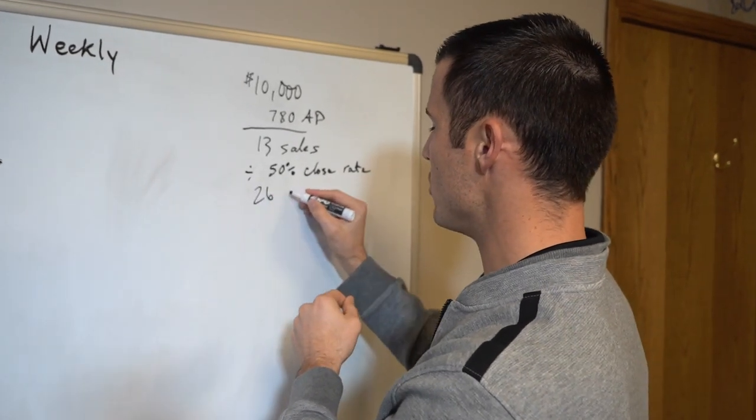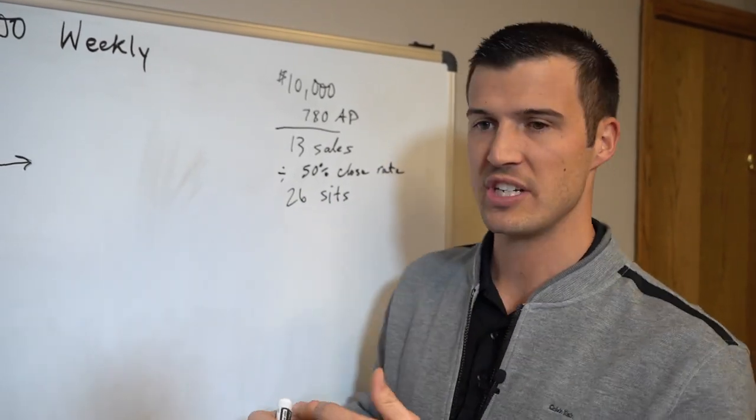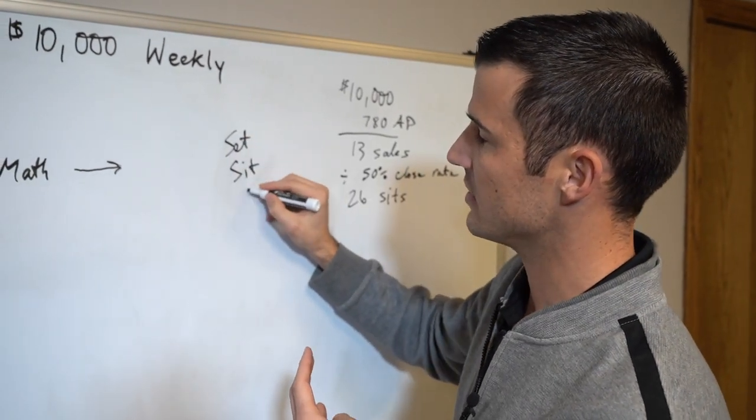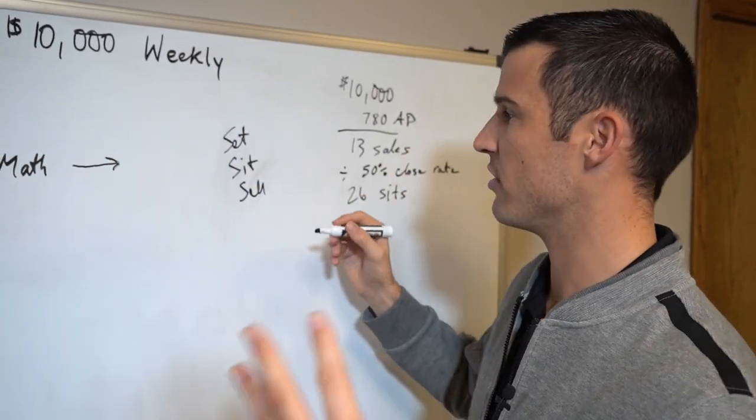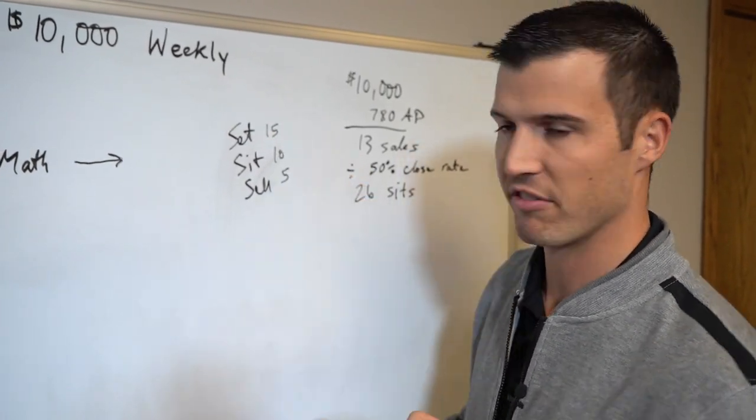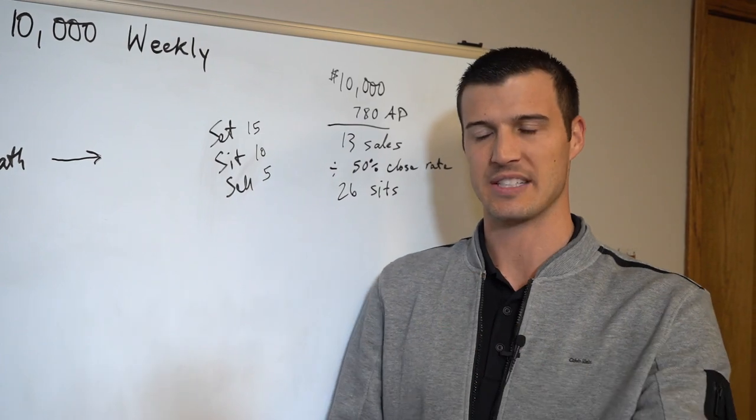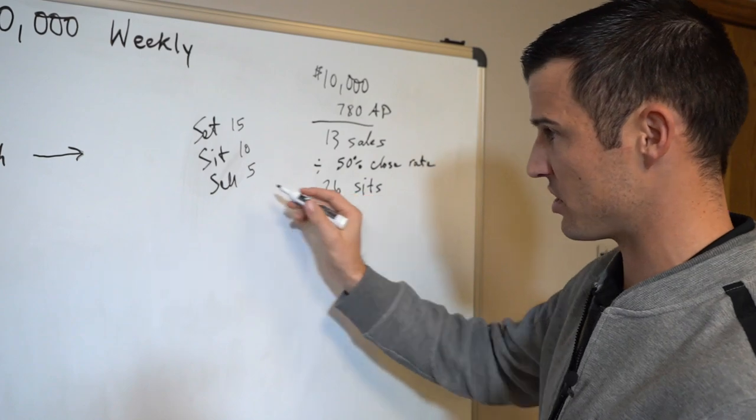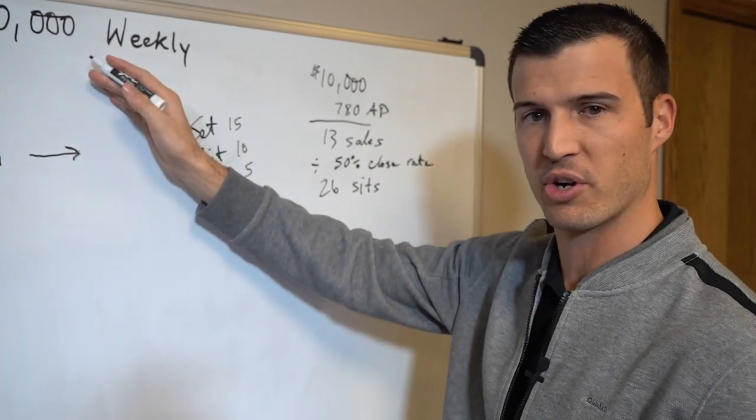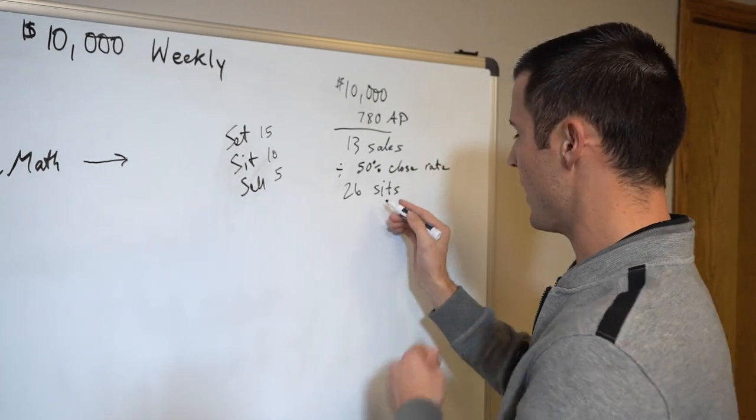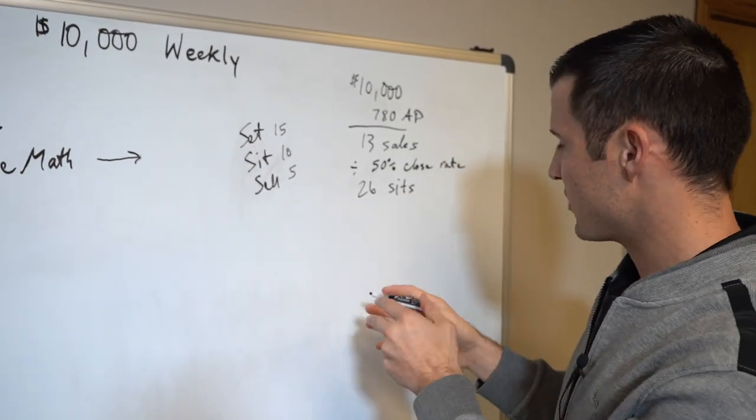Let's go back to divide by 50% close rate, then you need 26 sits which means you need to sit down. I teach a system called set, sit and sell. I believe every insurance agent needs to set 15, sit with 10 and sell 5. That's my triple S weekly system because 92% of insurance agents fail. 26 sits, that means you just sit down. It's a lot more than that but we're looking at a much bigger number, this is for about 52 grand a week.